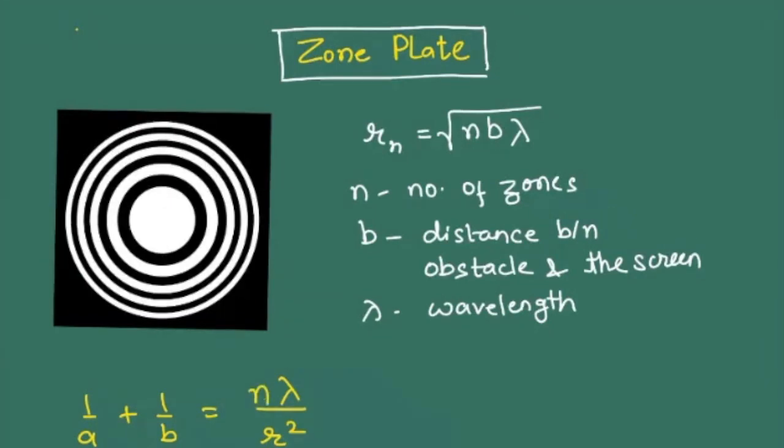What is the difference? The only change would be that a is the distance between source and the obstacle.